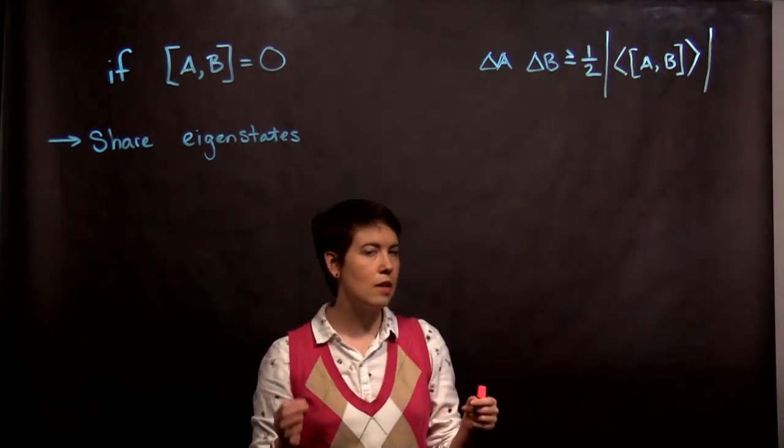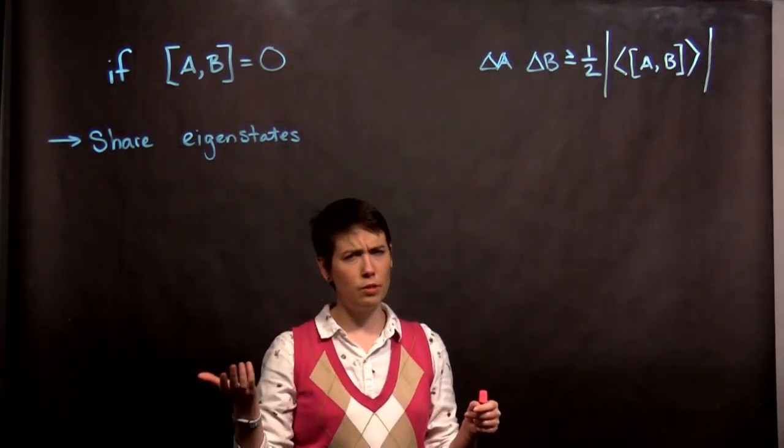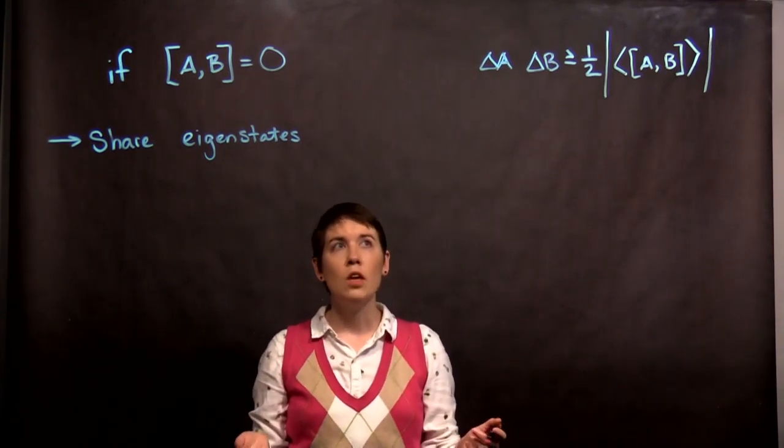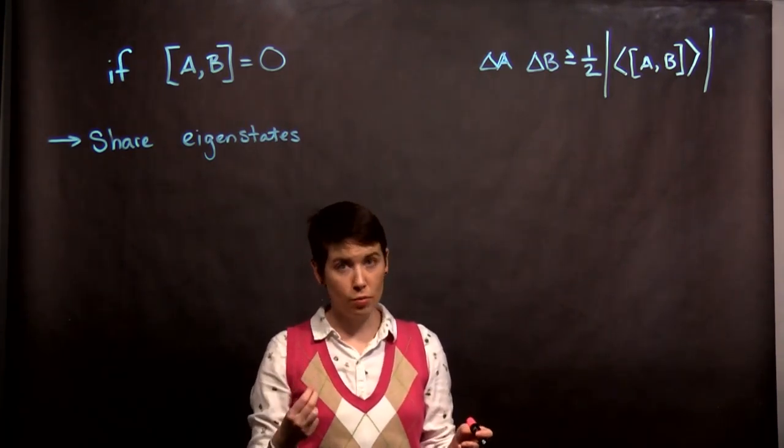We can't simultaneously know is it up or down in x, up or down in y. You can't know that. This gets us to our uncertainty principle.